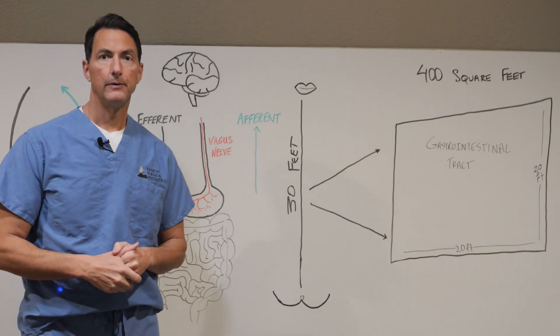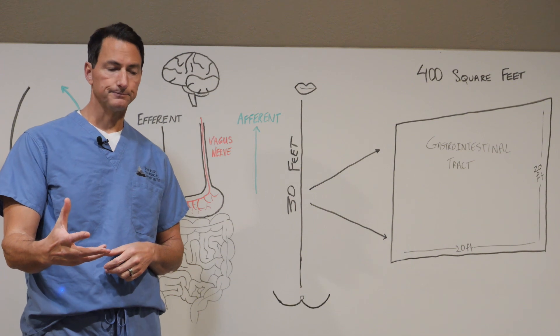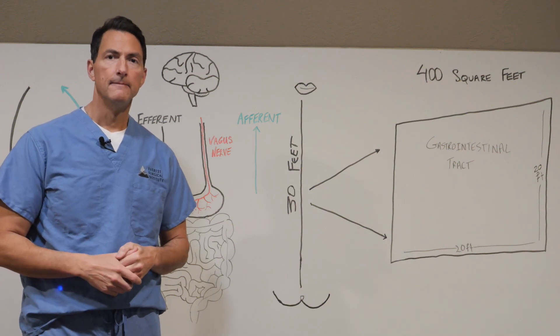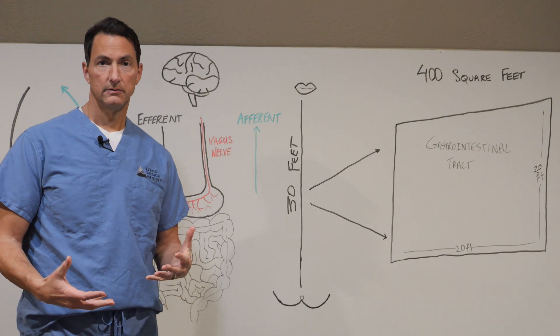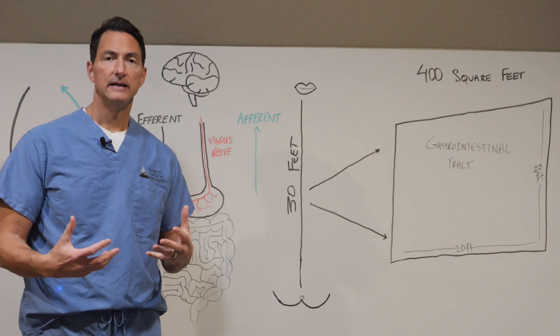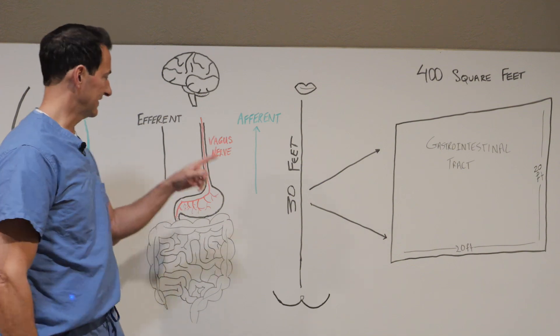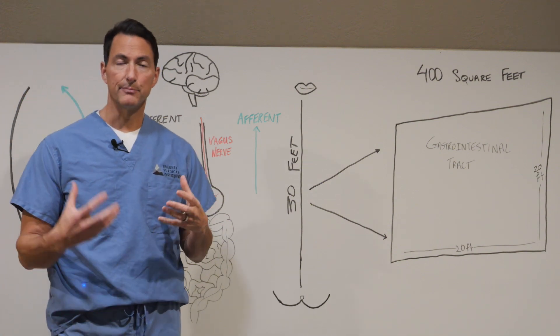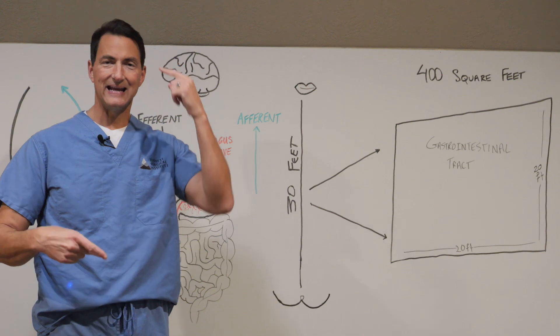Now I'm going to explain today why visceral fat is unhealthy. As we talked about last time, every cell in the body communicates with the brain through a circuit. Almost always it is primarily through nerves.